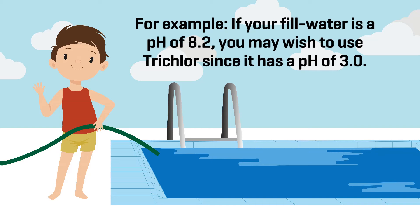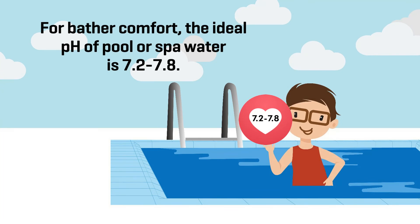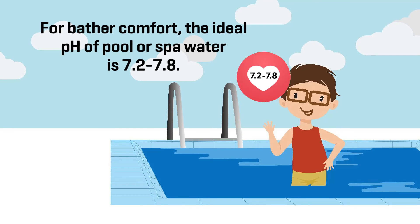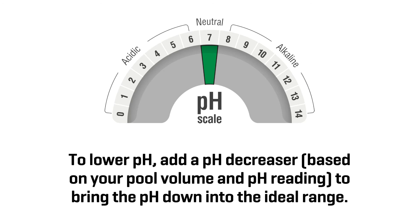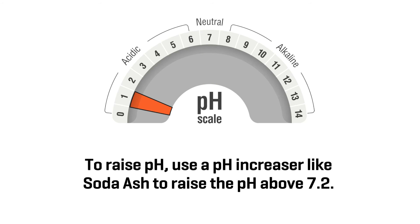For example, if your fill water is a pH of 8.2, you may wish to use trichlor since it has a pH of 3.0. For bather comfort, the ideal pH of pool or spa water is 7.2 to 7.8. To lower pH, add a pH decreaser based on your pool volume and pH reading to bring the pH down into the ideal range. To raise pH, use a pH increaser like soda ash to raise the pH above 7.2.